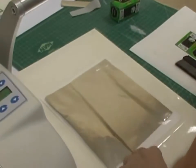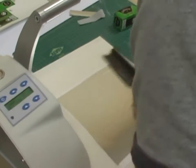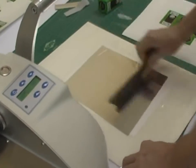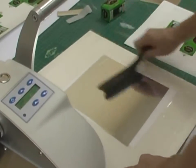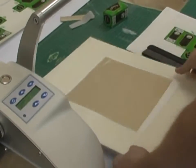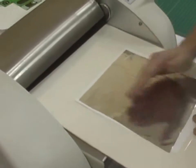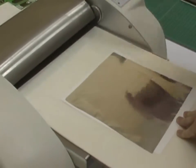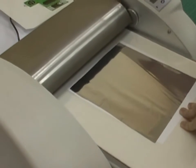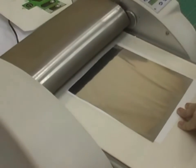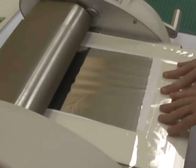We put our cover sheet down again and smooth it out, removing any air underneath. Then we run the metallic foil through the laminator.